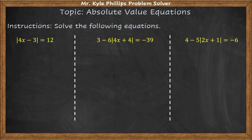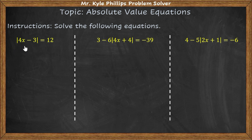In this video we're going to be talking about absolute value equations. We have three basic examples to solve. One important rule: you must isolate the absolute value expression first. In this example we have 3 minus 6 times the absolute value — you can't do anything until you move the 3 and divide by negative 6. Same thing here: move the 4 and divide by negative 5 first. You cannot do anything until the absolute value bars are by themselves.